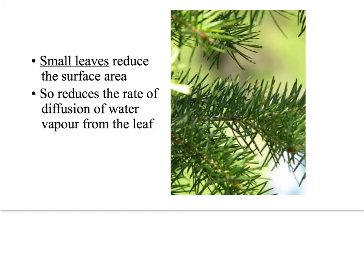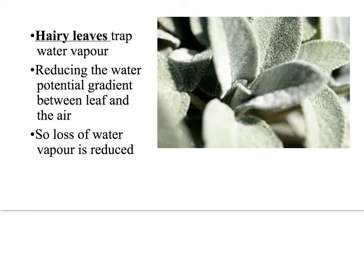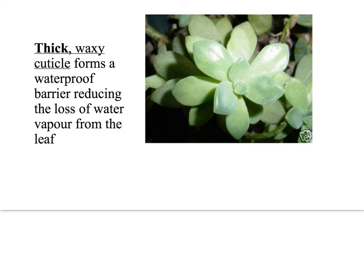Pine trees that live in cold Arctic regions, such as Christmas trees, have very small leaves often called needles. These small leaves reduce the surface area of the leaf, and they also have fewer stomata to reduce the rate of diffusion of water vapour from the leaf. Some plants have hairy leaves which trap water vapour around the plant, reducing the water potential gradient between the leaf and the air so less water vapour is lost. Some plants also have an extra-thick waxy cuticle, which forms a waterproof barrier that reduces the loss of water vapour from the leaf.